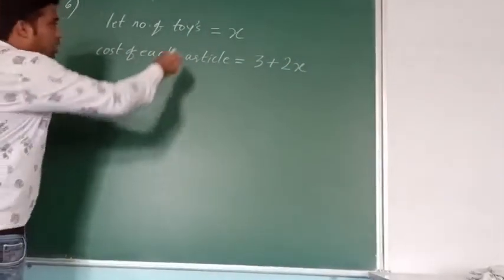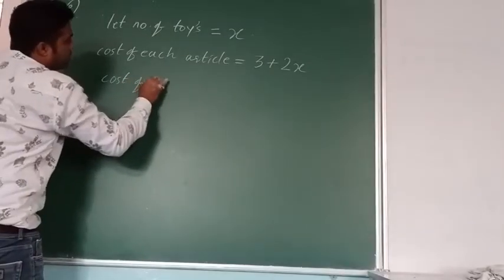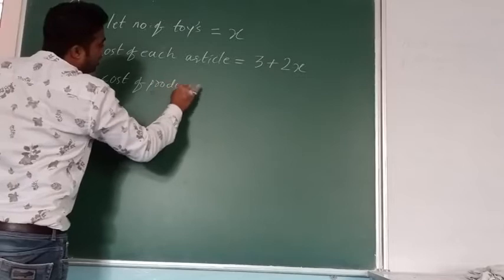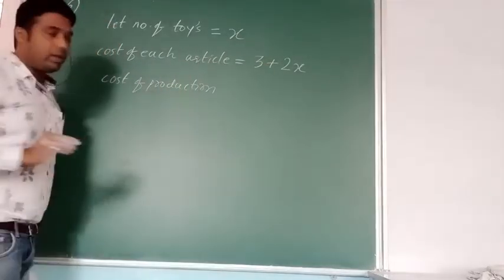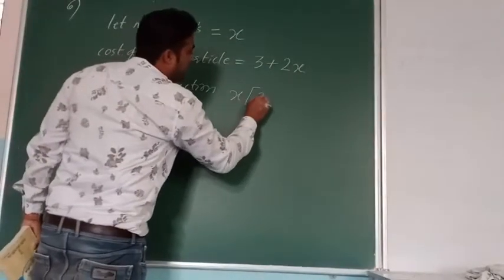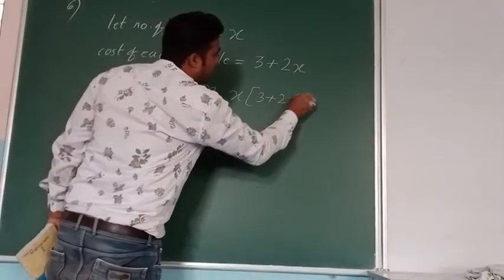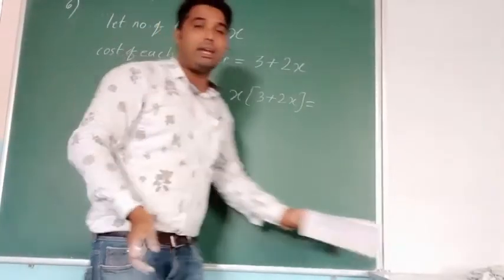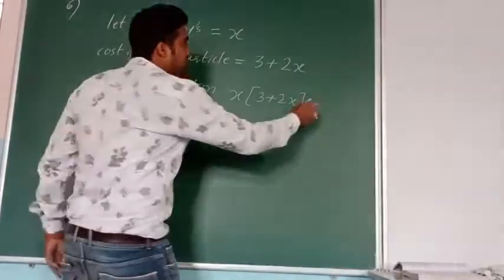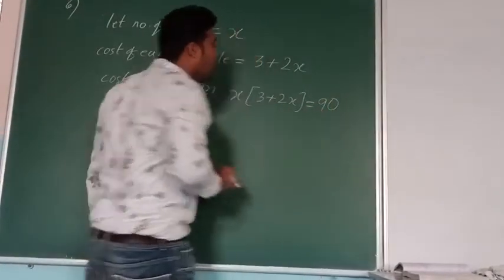Then, cost of production. Whenever the word production comes, you need to get both of them in the multiple form. That is x in the bracket, 3 plus 2x, which is equal to the cost of production. They said it is 90 rupees, so this becomes 90 rupees, which is equal to 90.